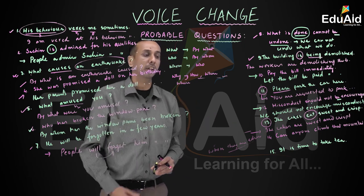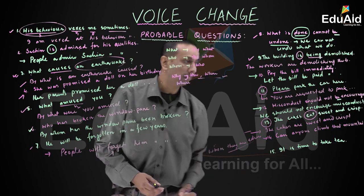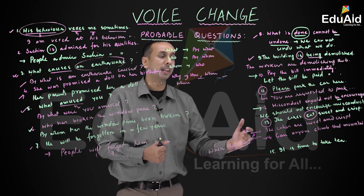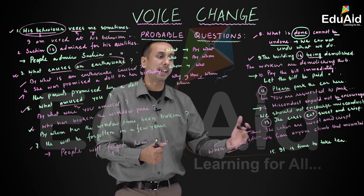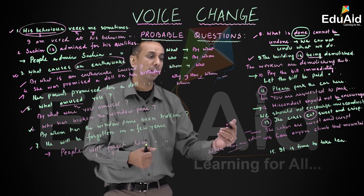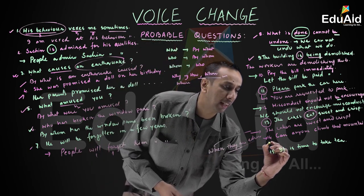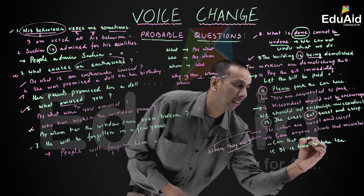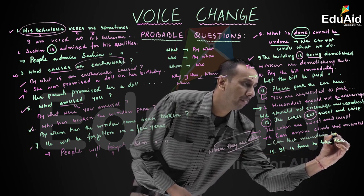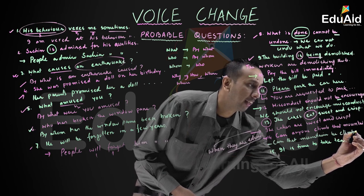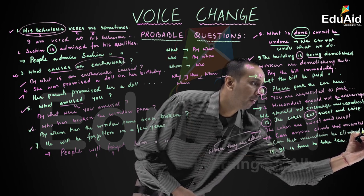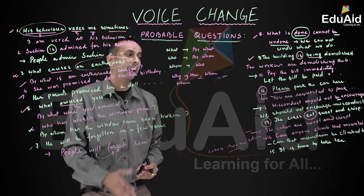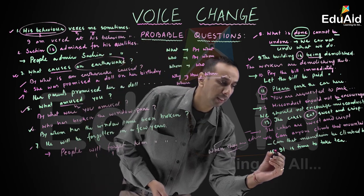Question number fourteen: 'Can anyone climb that mountain?' This is an interrogative sentence with the modal auxiliary 'can.' The passive form is: 'Can that mountain be climbed by anyone?' Retain the question mark.